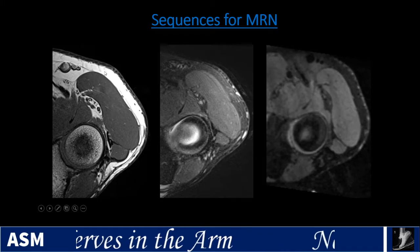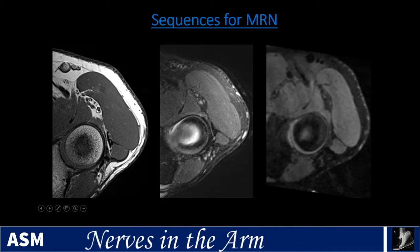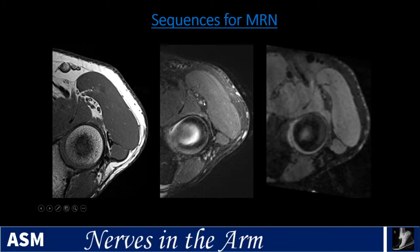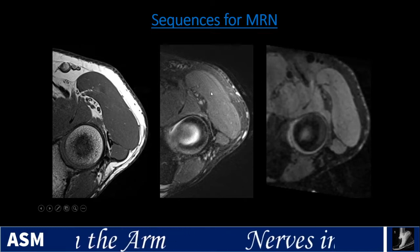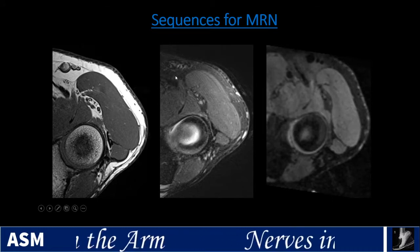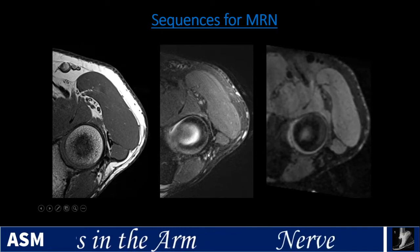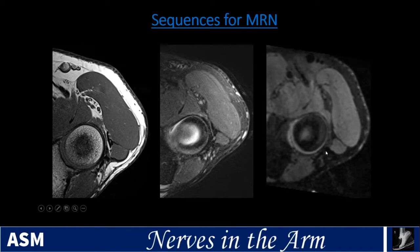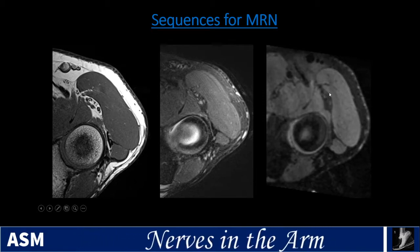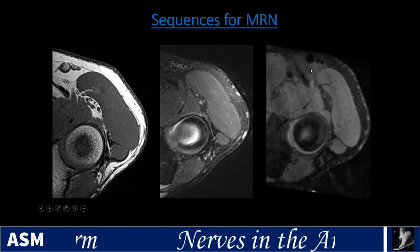Here's an example showing the T1, PD fat sat, and PSIF side by side. We're looking at the bifurcation of the radial nerve into the deeper posterior interosseous branch and the superficial branch. On PD fat sat, the nerve is slightly bright but not significantly brighter than muscle — not as bright as vessels or joint fluid. You can also make out the lateral antebrachial cutaneous nerve. The vessels nearby turn black on the PSIF pulse sequence, leaving behind the visible radial nerve branches.